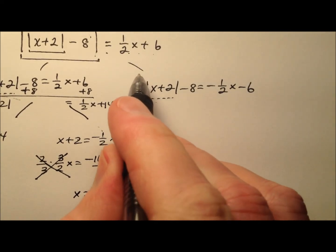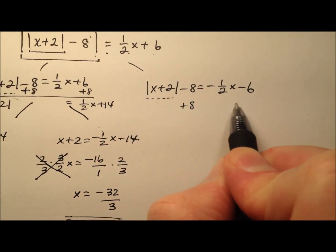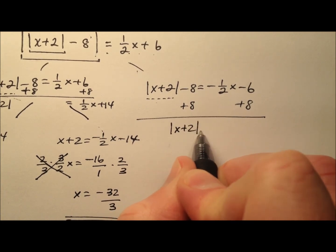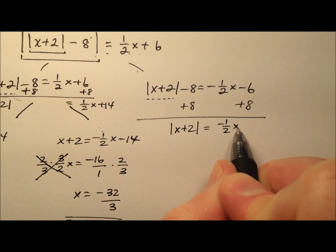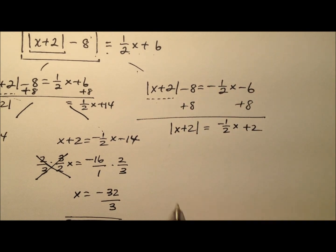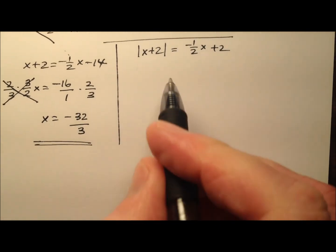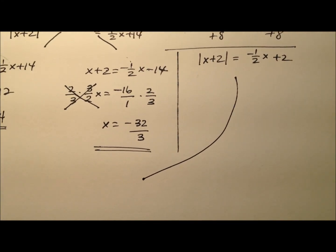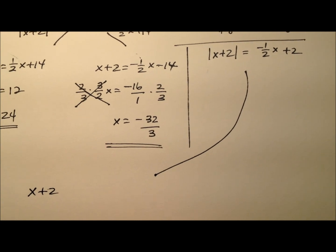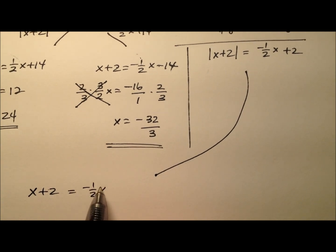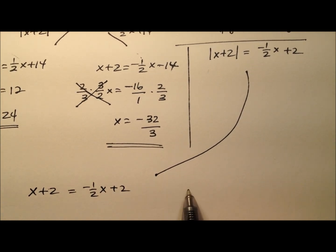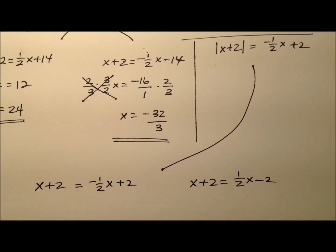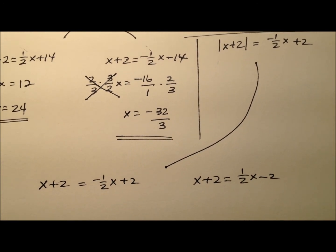Now let's do the same with the second equation. Adding 8 to both sides gives the absolute value of x plus 2 on the left, and negative one-half x plus 2 on the right. Splitting this into two separate equations: x plus 2 equals negative one-half x plus 2, and x plus 2 equals positive one-half x minus 2.